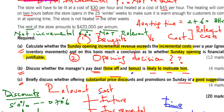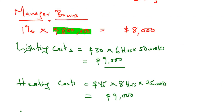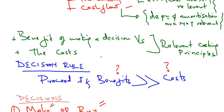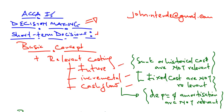This has been a very good question covering all the salient features. We covered the theory of relevant costing — a future incremental cash flow — and used it to make an opening decision. You can send feedback to john.intende@gmail.com. We've come to the end of this session — please look out for my other videos and I wish you the best in your exams.